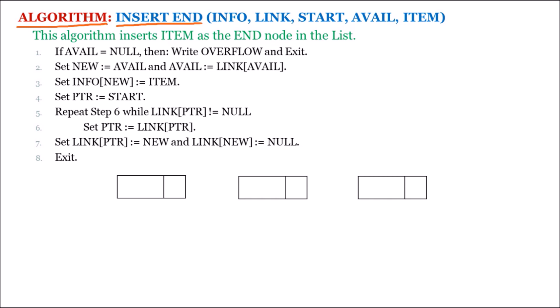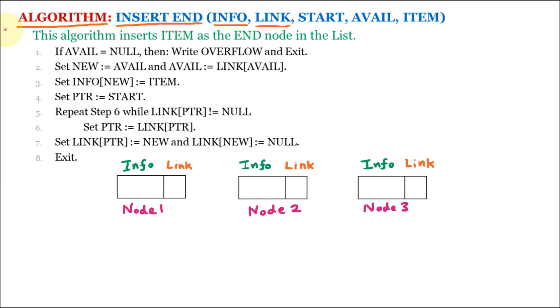We are assuming that there is a linked list which contains three nodes. Every node of the linked list has two parts: the first one is the info part and the second part is the link part. Node 1's link part contains the address of node 2, node 2's link part contains the address of node 3, and the last node, node 3, has null. The linked list contains values 7, 9, and 10 in the info parts of nodes 1, 2, and 3 respectively.